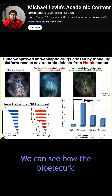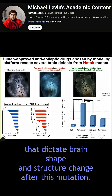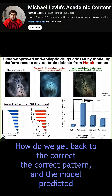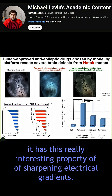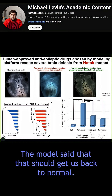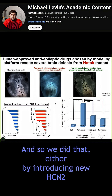We asked the model: we can see how the bioelectrics that dictate brain shape and structure change after this mutation — how do we get back to the correct pattern? And the model predicted this one particular channel called HCN2, that if we were to open it, it has this really interesting property of sharpening electrical gradients. The model said that that should get us back to normal.